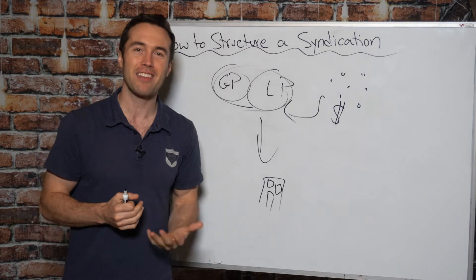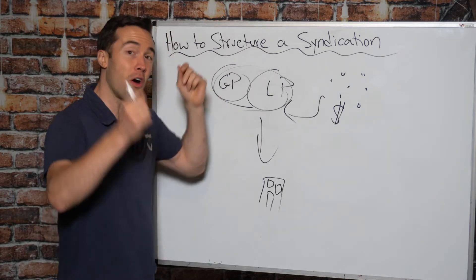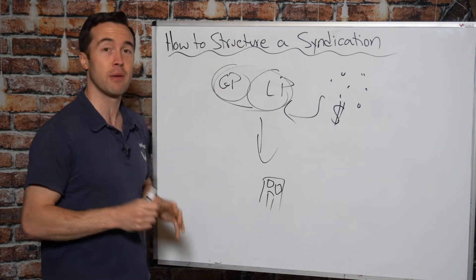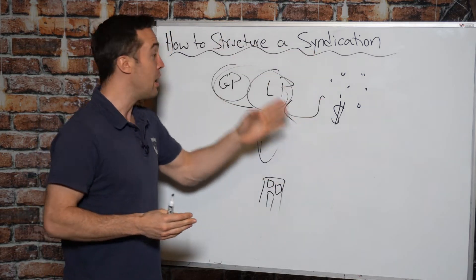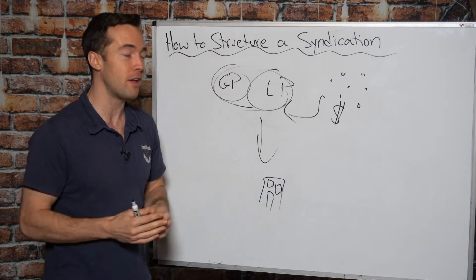it's very unlikely that one person is going to wear all the different hats that the general partnership needs to wear. So step number one in how to structure your syndication, structure your general partnership with the right people on the team.